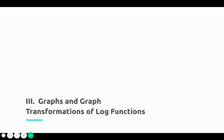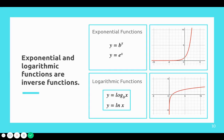Moving on to graphs and graph transformations of log functions. Exponential and logarithmic functions are inverse functions, meaning they undo each other — kind of like addition and subtraction, multiplication and division, or squares and square roots. With exponential functions, you have y equals b to the x, and a special case is y equals e to the x, our natural exponential function.